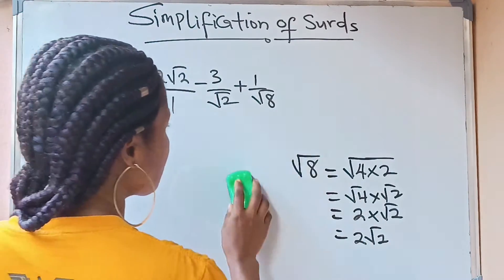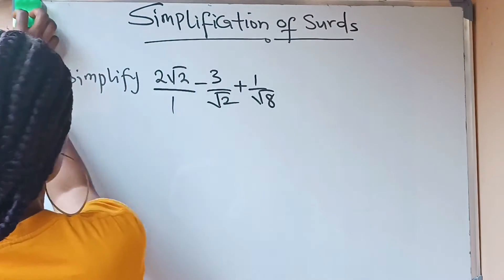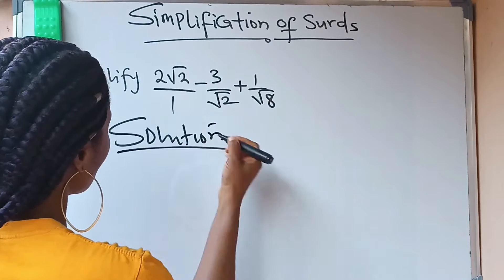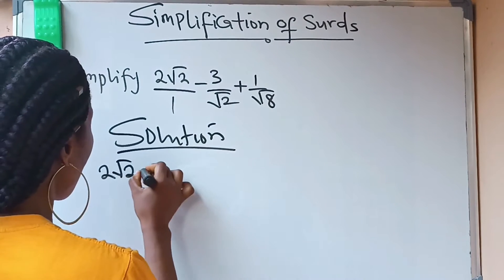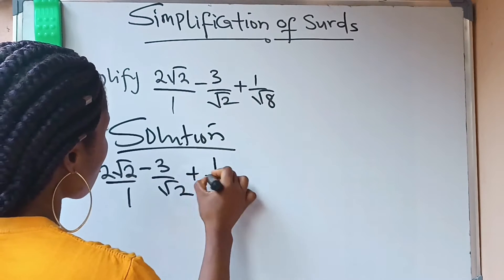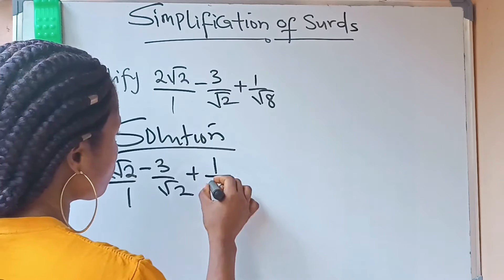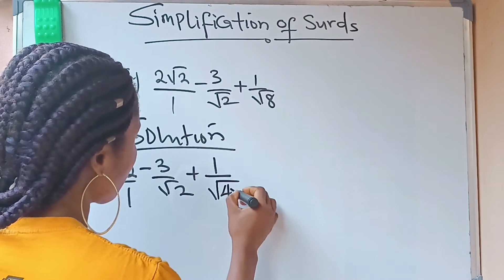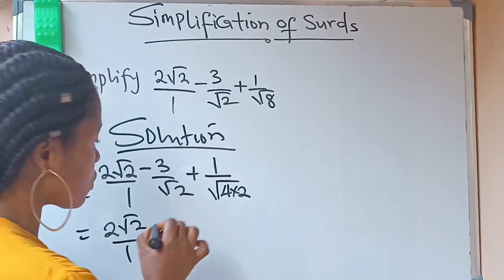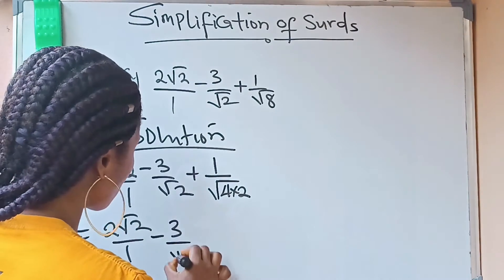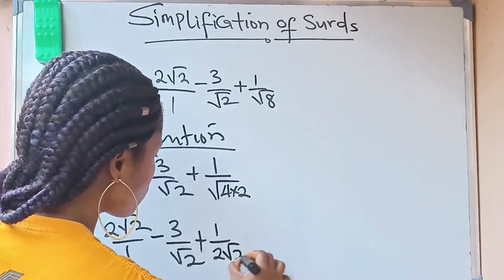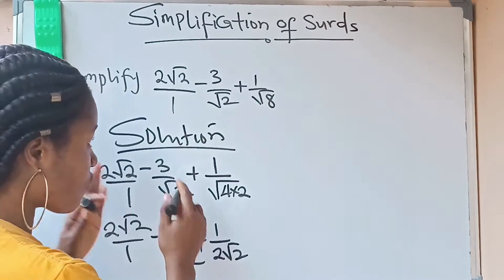So let's rewrite the original expression. We have 2 root 2 minus 3 over root 2, plus 1 over root 8. Since root 8 equals root 4 times 2, and root 4 is 2, this becomes: 2 root 2 minus 3 over root 2, plus 1 over 2 root 2.